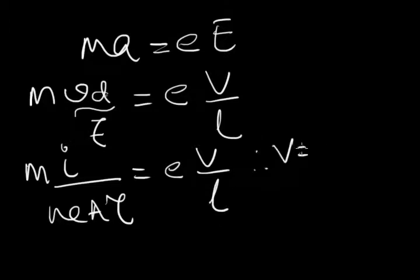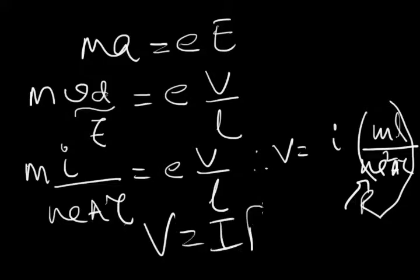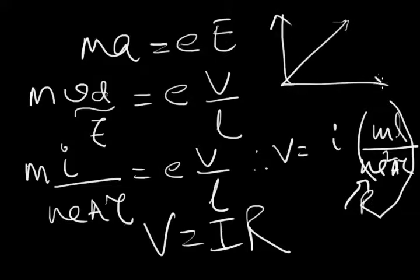We write V for voltage, so what is V? It is I times mL/(Ne²Aτ). This whole thing is now known as R, and we write V = IR. We can draw the V versus I graph and find a straight line which suggests that the linear relation between V and I.